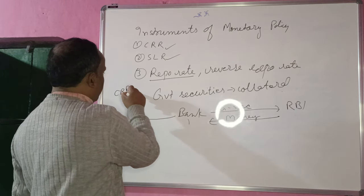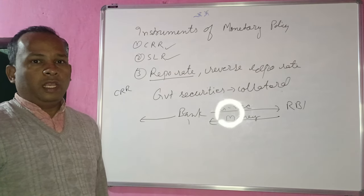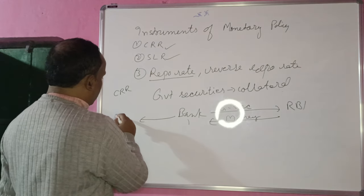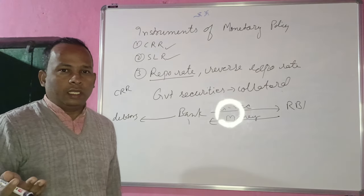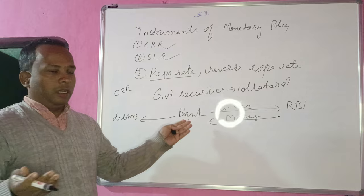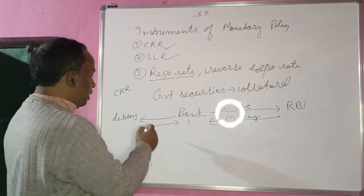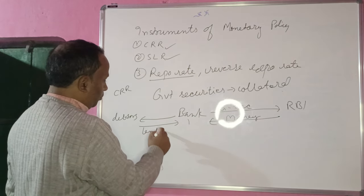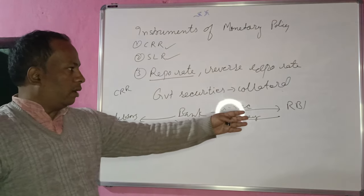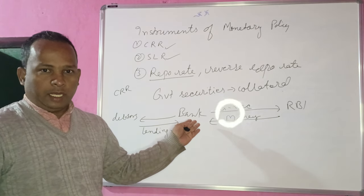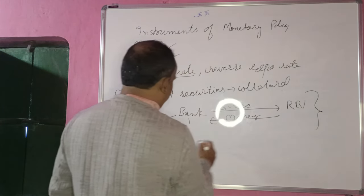If CRR is 10%, then 10% of the money will be kept as reserve in the name of RBI, and the remaining money will be lent to debtors — investors and businessmen who need money. The interest rate paid by debtors to the bank is called the lending rate. This entire facility provided by RBI to commercial banks like SBI, STFC, and ICICI is called the Liquidity Adjustment Facility.